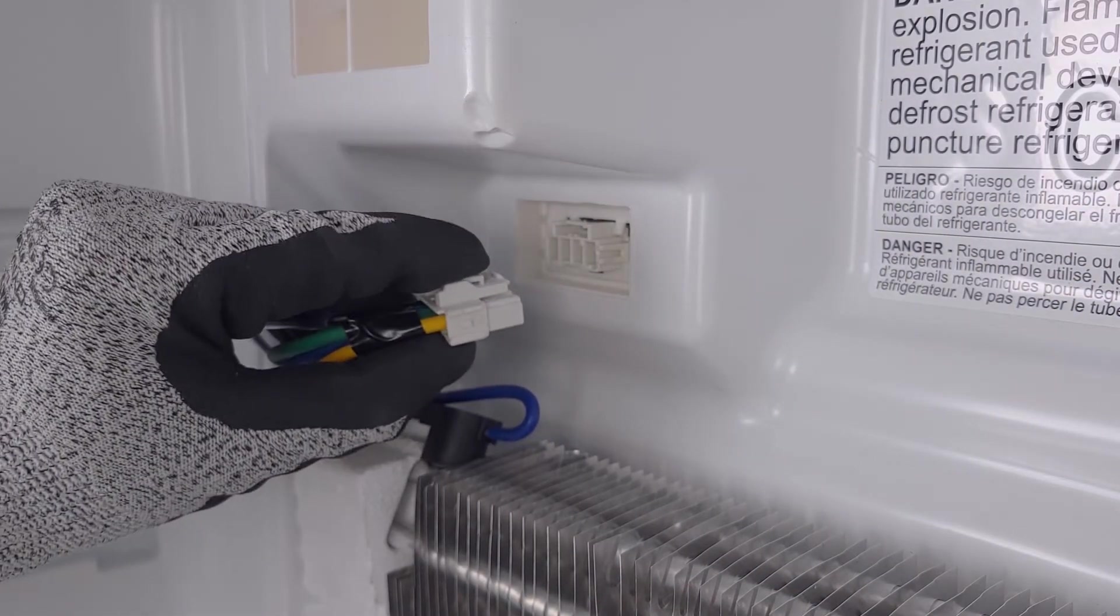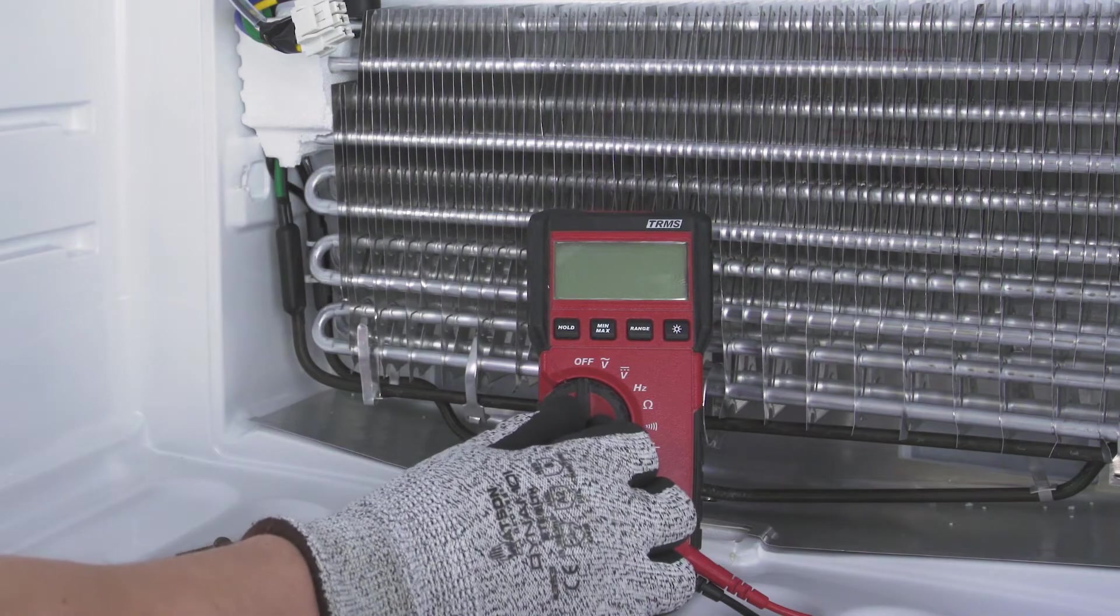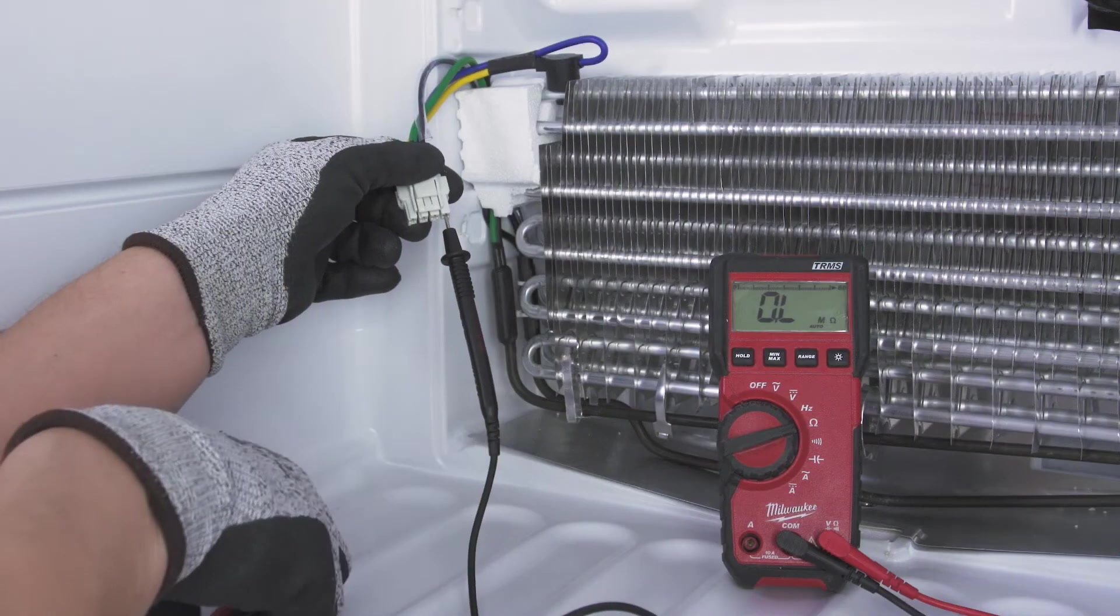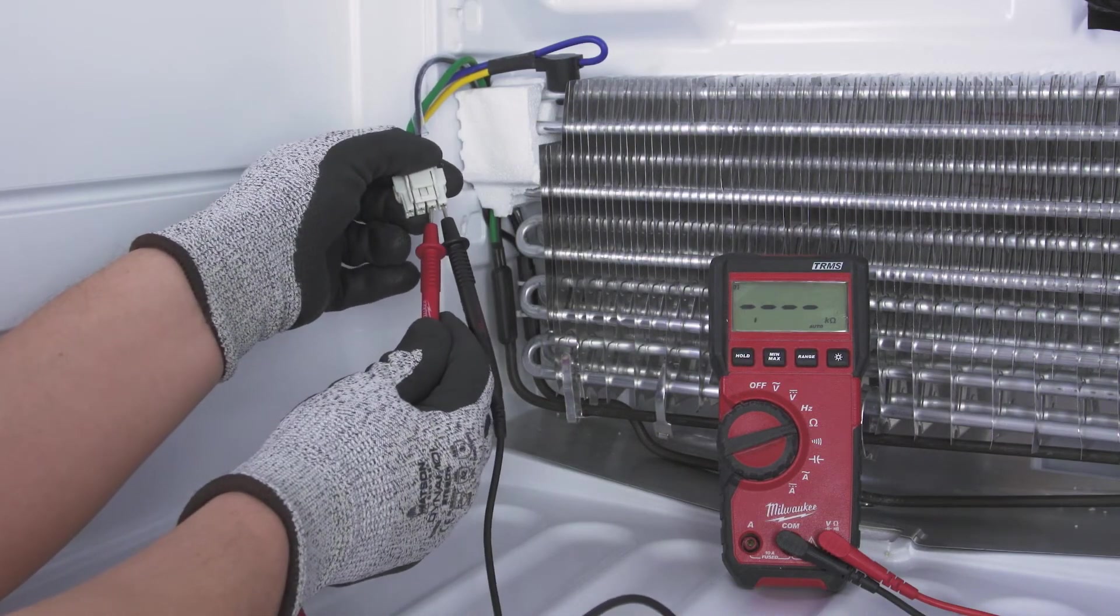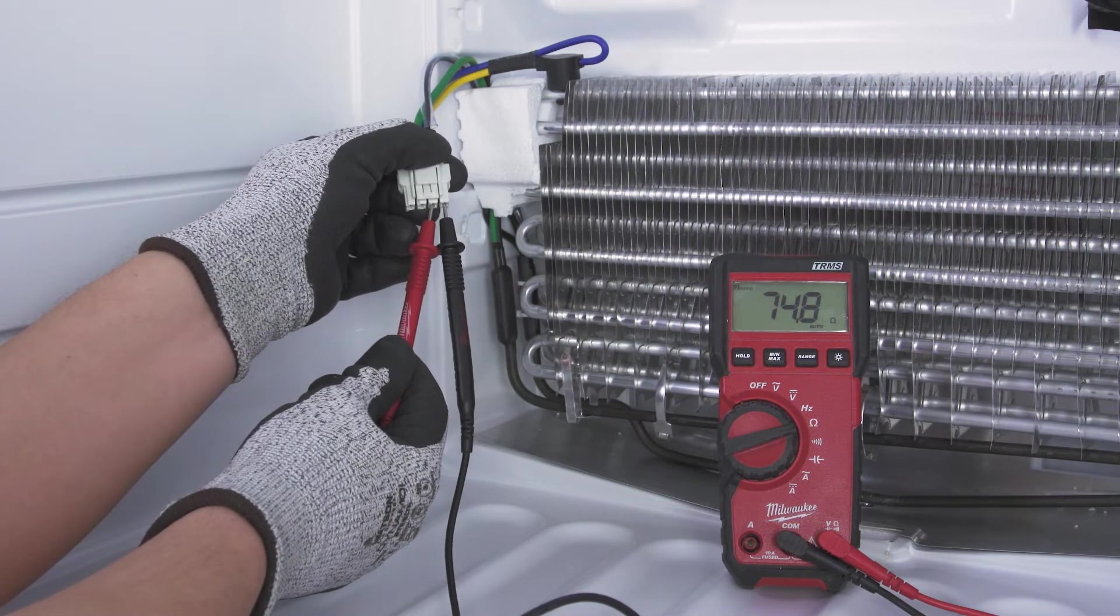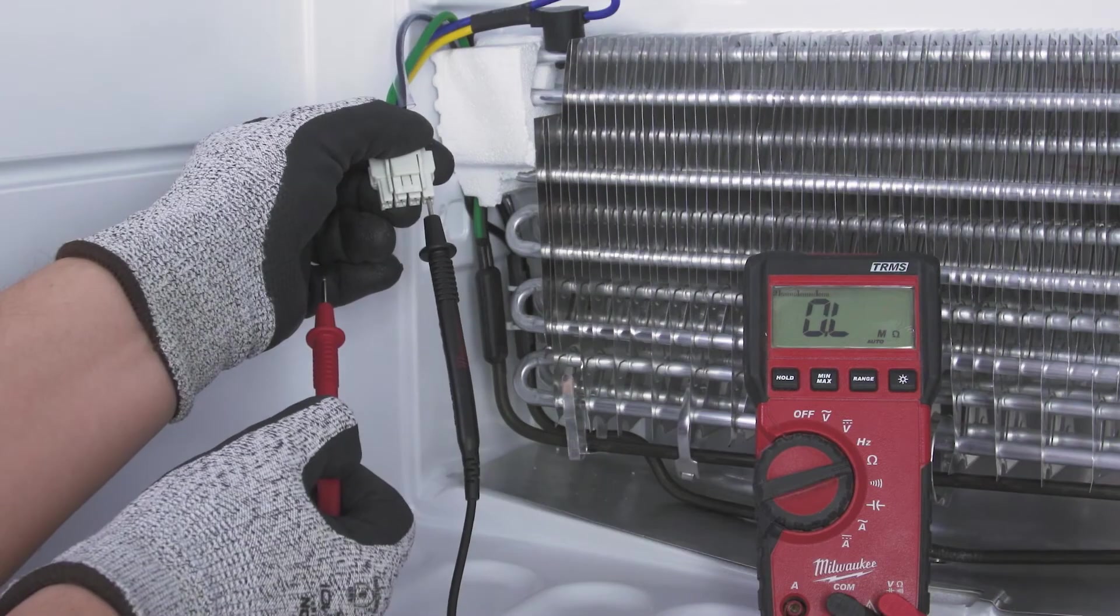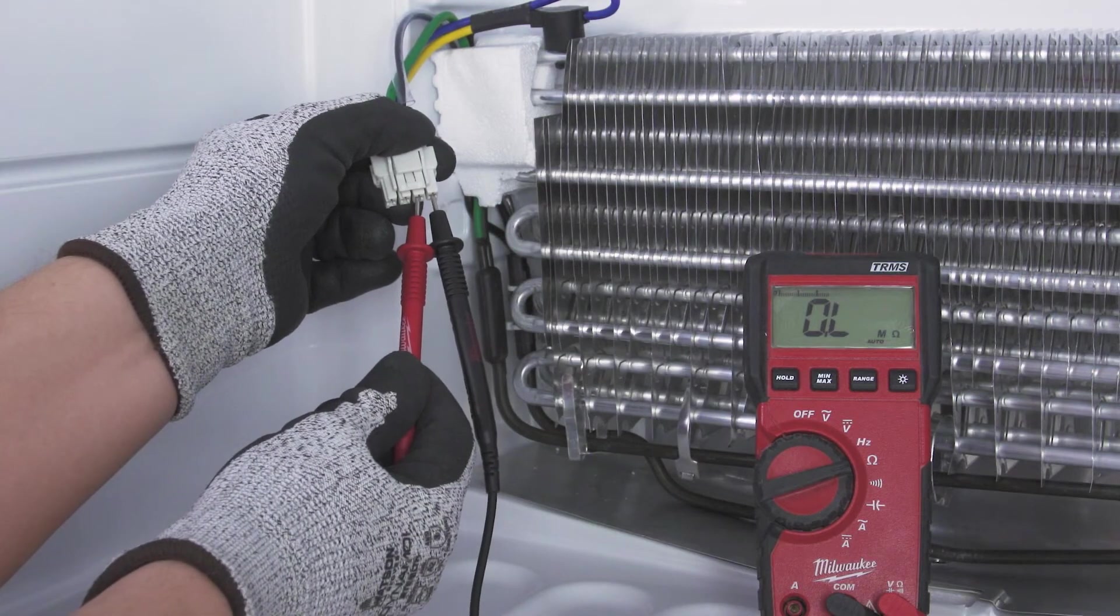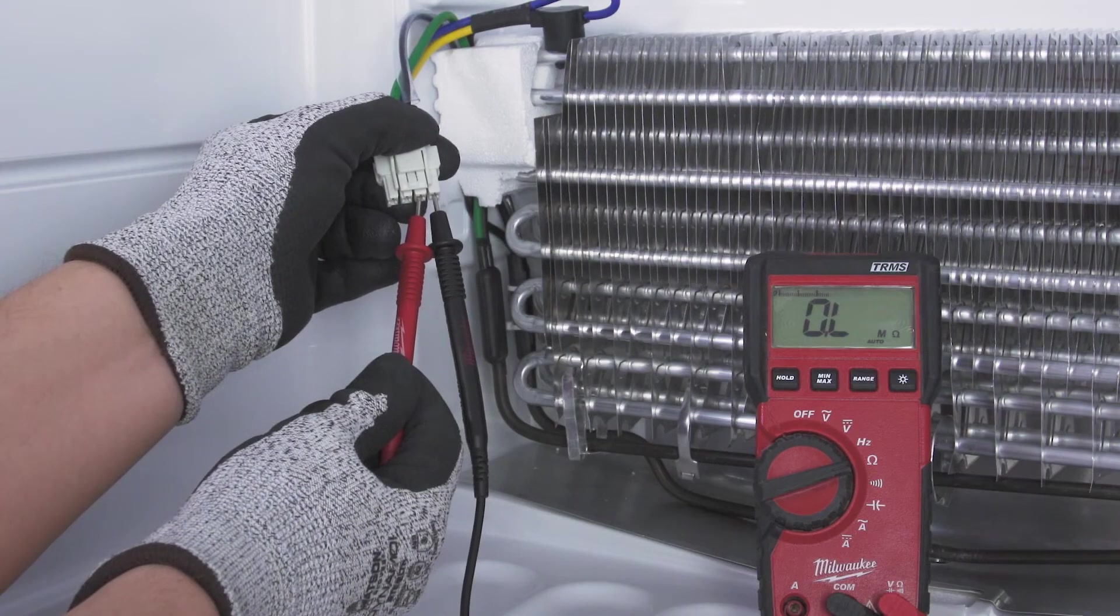Remove the wire connector. Set the multimeter to the ohms or resistance setting. Now touch the probes to each of the corresponding terminals. If the element is good, it should have a resistance between 20 and 100 ohms. If there's no continuity or if the resistance is significantly off, then the defrost heater is faulty and should be replaced.